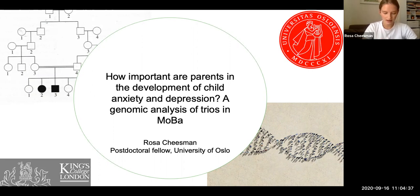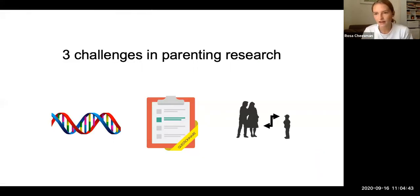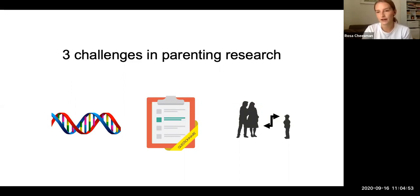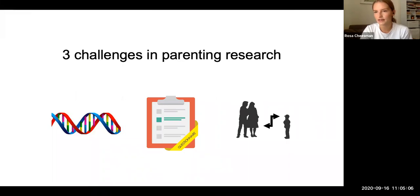It's quite difficult to work out how important parents are for their offspring's emotional development. I'll talk about three key challenges. The first one really is genetic confounding. Parents don't only expose their children to a social environment, but they pass on genes. So if we're looking at associations between particular parent characteristics and child anxiety and depression, without using genetically informative designs, we don't really know for sure whether that represents a causal environmental effect.